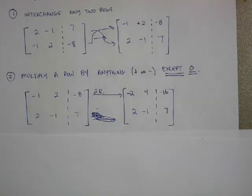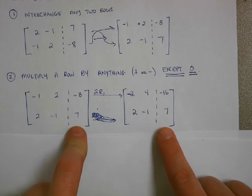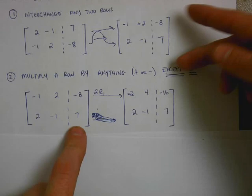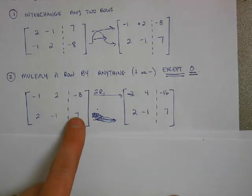I'll rewrite my bottom row. I'll just copy it over. And what we're saying here, according to the rules of manipulation of matrices, this matrix on the right and this matrix on the left are exactly the same thing. Now, the last rule. So we can interchange any two. We can flip-flop them. We can multiply a row by anything, positive and negative except 0.